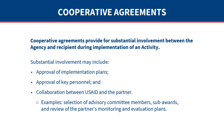A cooperative agreement provides for substantial involvement between the agency and the recipient during implementation of the activity. The level of substantial involvement USAID anticipates is relative to the project rather than an absolute. Read the substantial involvement section of the solicitation or your agreement for what it means for your specific award. The agency must always have some involvement in assistance awards — for example, by monitoring performance, reviewing reports, or providing approvals required by regulations.